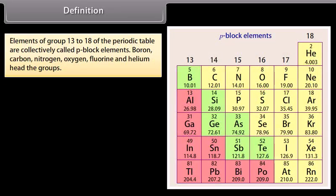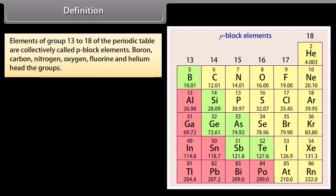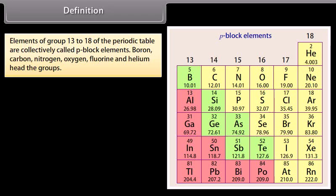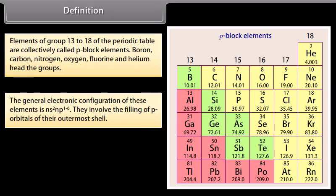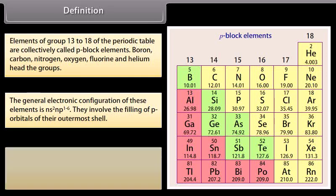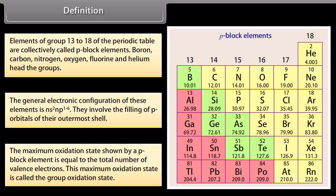Elements of groups 13 to 18 of the periodic table are collectively called P-block elements. Boron, carbon, nitrogen, oxygen, fluorine and helium head the groups. The general electronic configuration of these elements is NS2NP1-6, involving the filling of P-orbitals of their outermost shell. The maximum oxidation state shown by a P-block element equals the total number of valence electrons, and is called the group oxidation state.